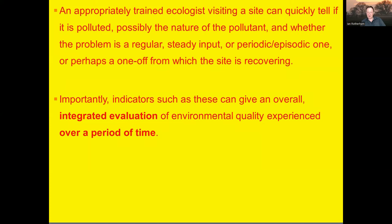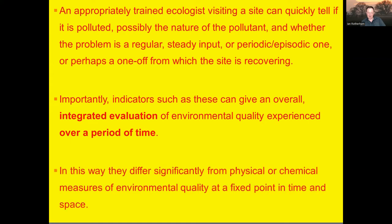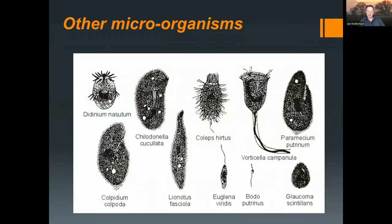Importantly, indicators such as these can give an overall integrated evaluation of environmental quality experienced over a period of time. In this way they differ significantly from physical or chemical measures of environmental quality at a fixed point in time and space. The microorganisms picked up in the aftermath of pollution — protozoans, unicellular algae, amoeba — exist in an essentially nutrient-rich soup. If you've got too many nutrients you get masses of a few species; as you drop nutrient levels you get fewer biomass but greater diversity; and if you reduce nutrients significantly you actually lose a lot of biodiversity too, ending up with small numbers of a relatively few, sometimes quite rare, species.